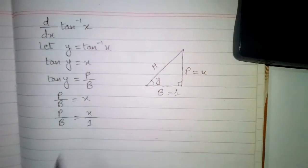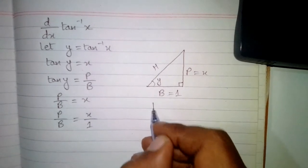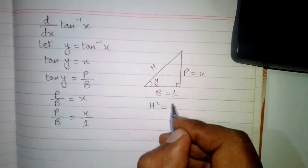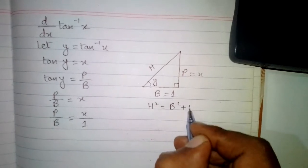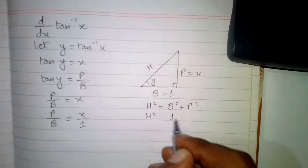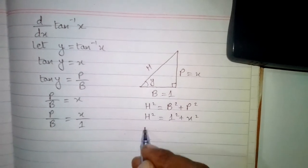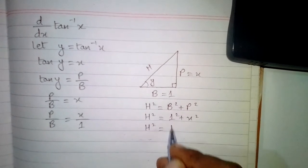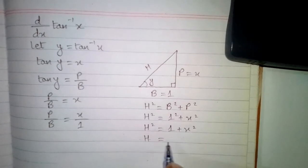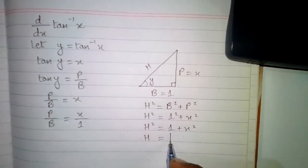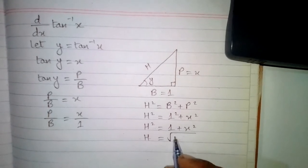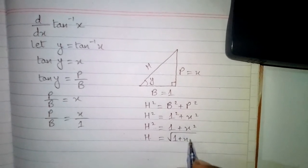Now we will apply Pythagoras theorem. Hypotenuse squared is equal to base squared plus perpendicular squared, so hypotenuse squared is equal to 1 squared plus x squared, which gives 1 plus x squared. Therefore the hypotenuse is equal to the square root of 1 plus x squared.